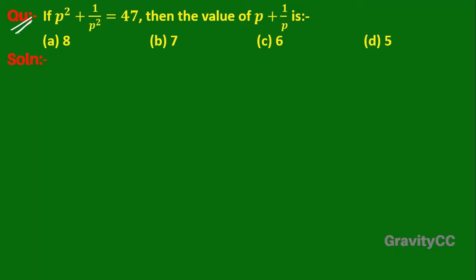The question: if p squared plus 1 upon p squared is equal to 47, then find the value of p plus 1 upon p.